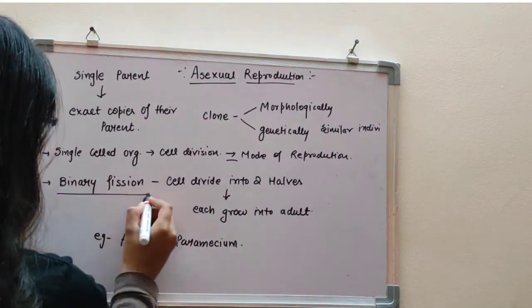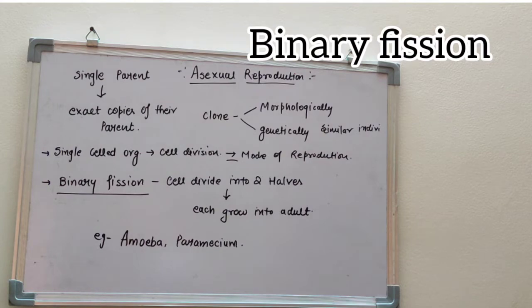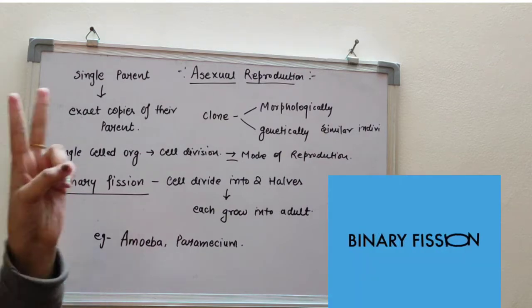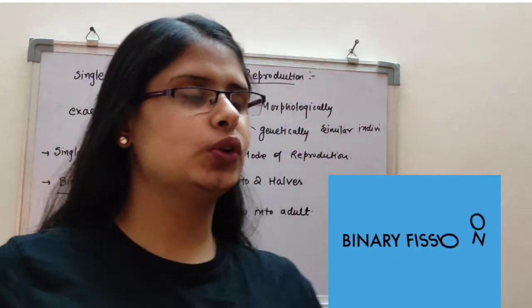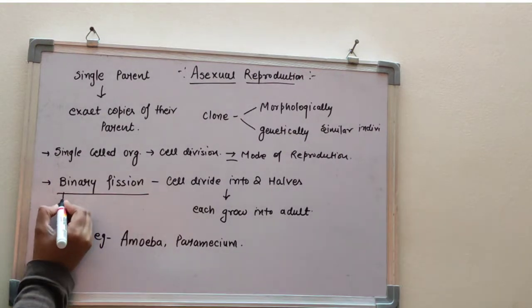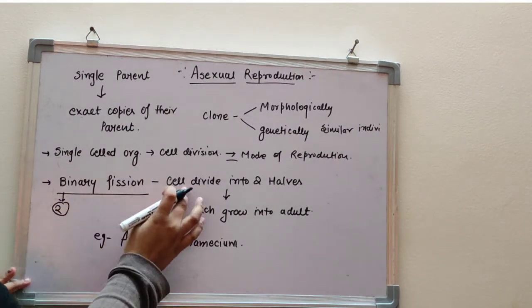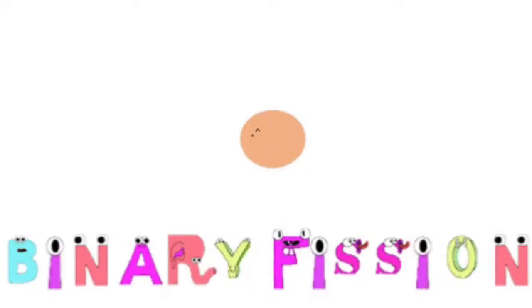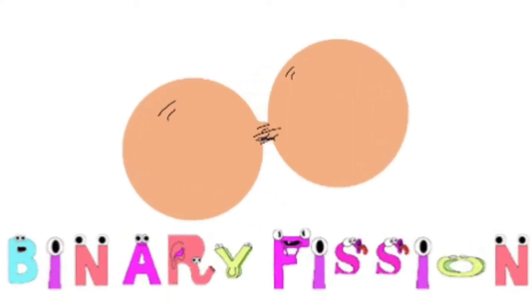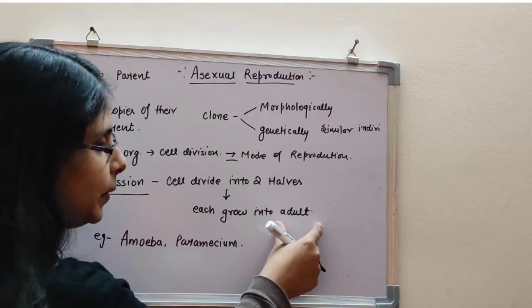Let's talk about binary fission. What is binary fission? Binary means two. In binary fission, the cell divides into two halves. These two halves grow into adults.